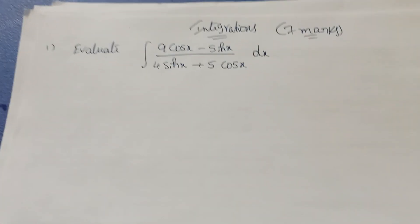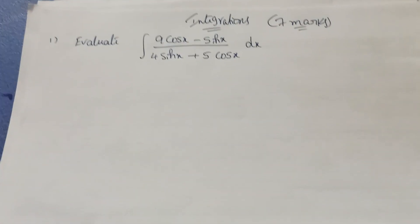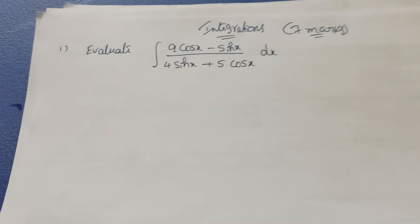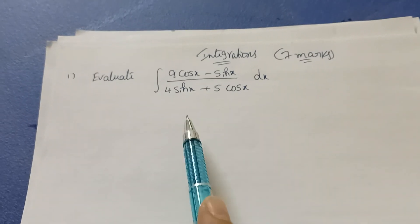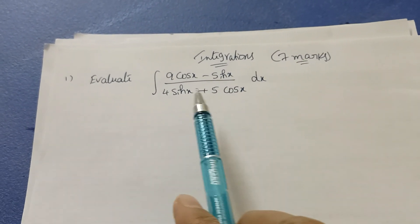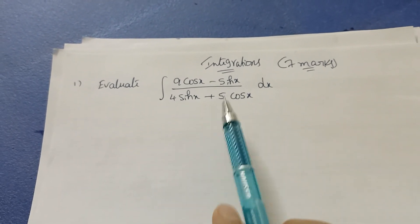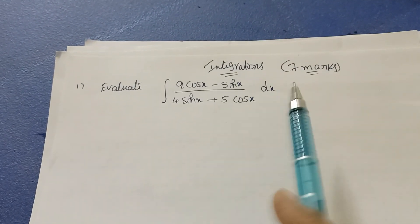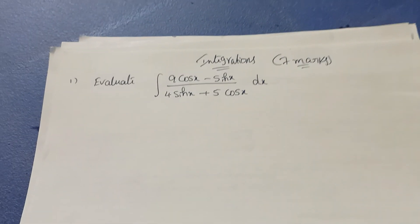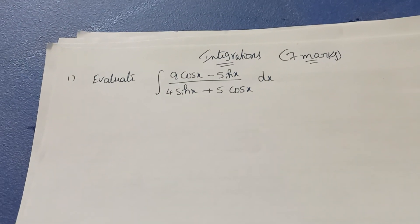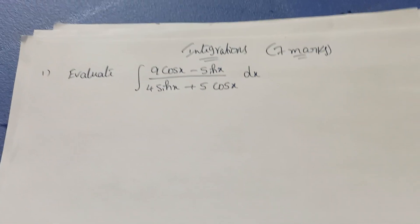Hi dear students, welcome back to my channel. Today we are discussing integration — a 7-mark important question. This type of question appeared in the model paper also. How to solve integration of (a·cosx + b·sinx) divided by (c·cosx + d·sinx)? Today we are discussing this type of question completely. In integration 7 marks, there are 2 questions of this type.